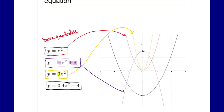The last one: we have an a value of 0.4 — a decimal — so that tells us we have a compression, meaning it should appear wider than our basic quadratic. We also have a negative four at the end, so it should be moved down four. This one in black does appear to be wider and is definitely lower than the others, and we can tell by looking at the vertex that it is lower.